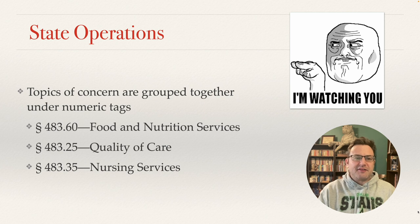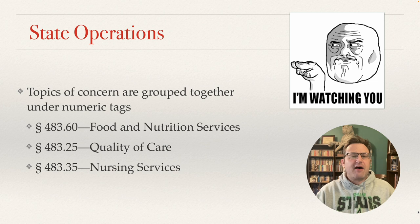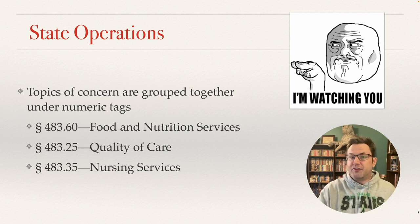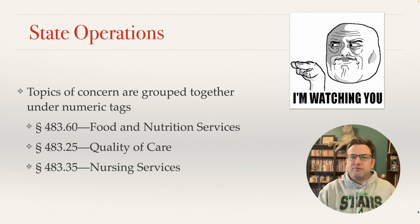Within state operations, the topics of concern are grouped under numeric tags. For dietitians, the ones we are concerned about are 483.6 which is food and nutrition services; 483.25 which is quality of care — more focused on nursing care but it can impact whether a dietitian is available, whether they're doing what they're supposed to be doing, whether the facility is providing nutritious meals, and whether they're meeting medical nutritional needs; and 483.35 nursing services, which is about whether there are enough people doing what they're supposed to be doing.